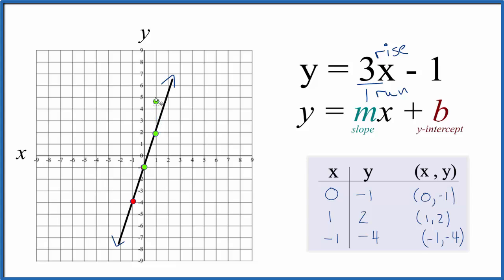Rise 1, 2, 3, and go over 1. Likewise, we could go down 1, 2, 3, and then go the opposite direction over 1. And we could do that one more time, 1, 2, 3, and all of these points, they're on the line.